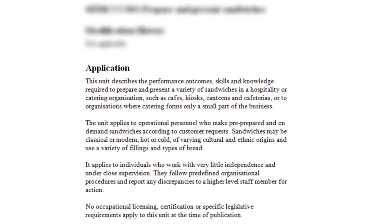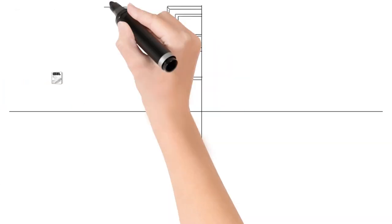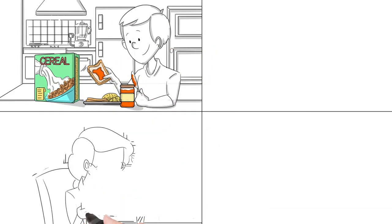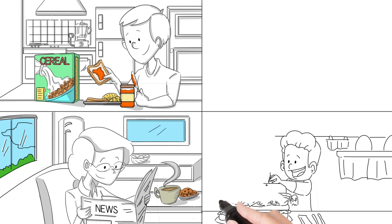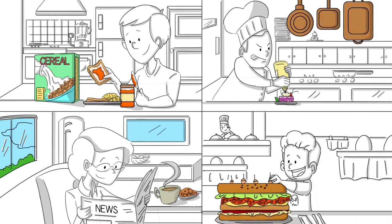The application information gives an overview of the unit, the job roles that the content may apply to and any licensing, certification or legislative requirements that apply to the unit. In the unit called prepare and present sandwiches, you can see that it would be relevant for people who would make a range of different sandwiches in cafes, canteens and cafeterias.